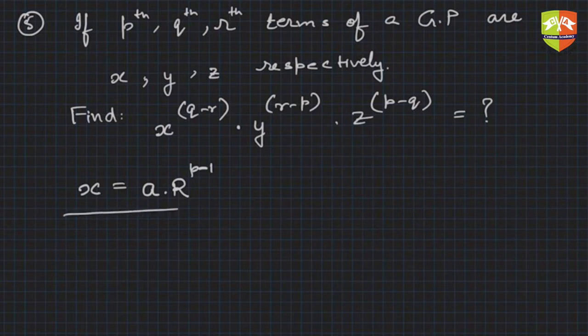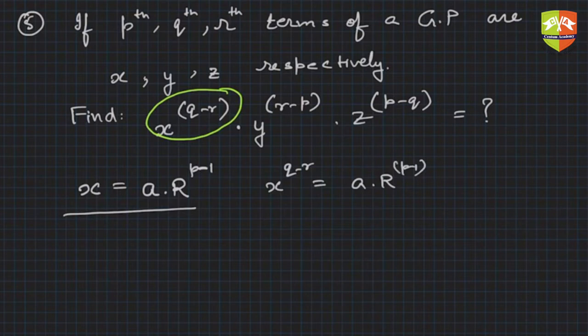Now here itself do the first thing. x is equal to this much, so x to the power (q minus r) finish this here itself. So you will get x to the power (q minus r) is equal to a times R to the power (p minus 1) whole to the power (q minus r), which is nothing but a to the power (q minus r) times R to the power (p minus 1)(q minus r).